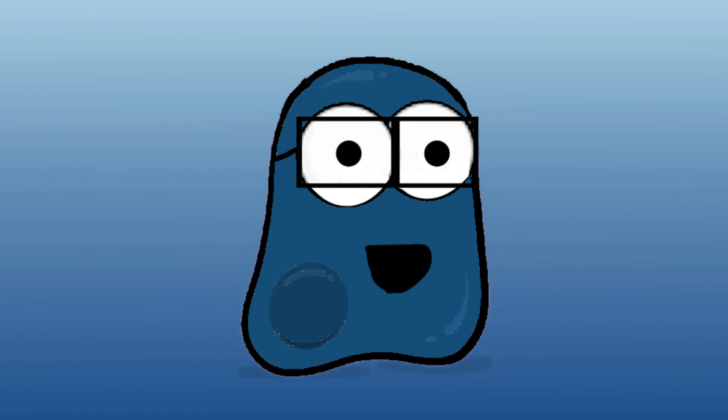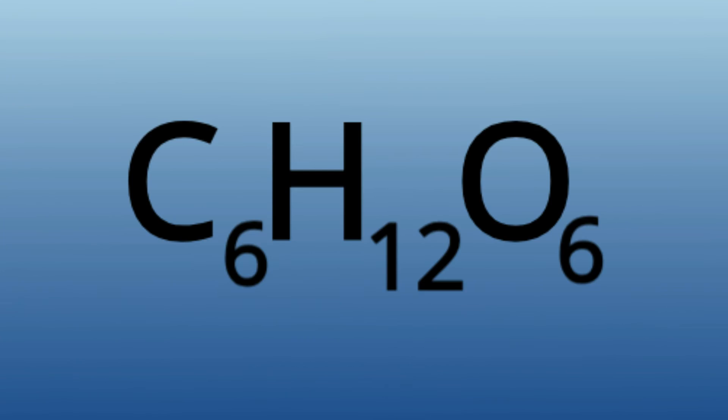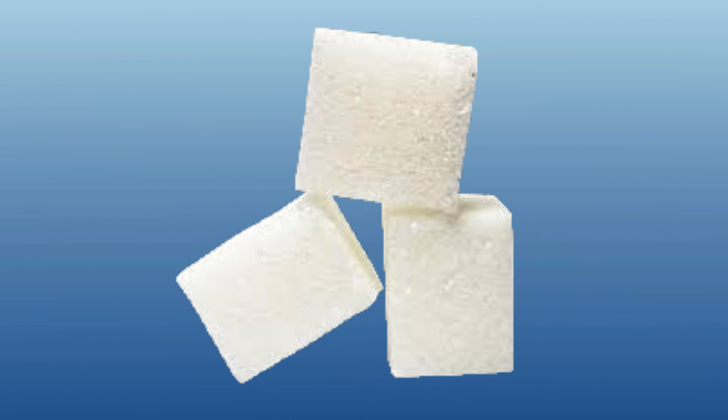Now, glucose is a pretty important part of photosynthesis, as it's the main reason why the plant photosynthesized. Glucose is food for the plant. This is basically how it eats. Glucose itself is just sugar.